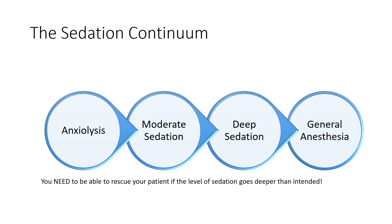General anesthesia is when the patient does not move to a painful stimulus. General anesthesia can be achieved with a natural airway, with a laryngeal mask airway, or with an ET tube for respiratory support. The presence or absence of an airway device does not dictate what your level of sedation is.